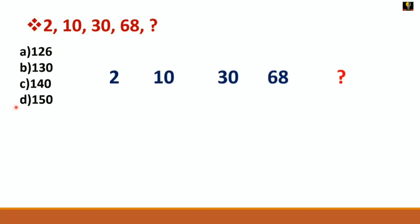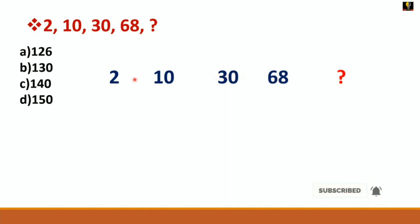Now, starting with the solution. The series is: 2, 10, 30, 68 — find the next number. You can see the differences: 2 to 10 is 8, 10 to 30 is 20, 30 to 68 is 38. There is no common relation between those differences, so you need to think in a different way.